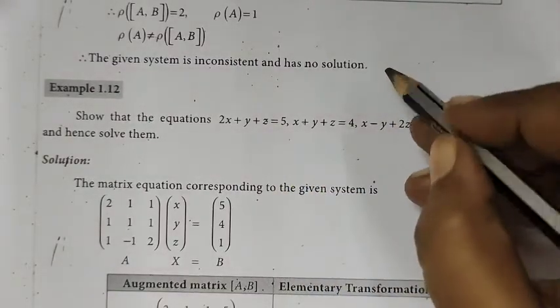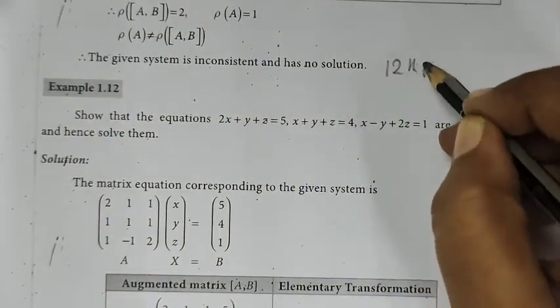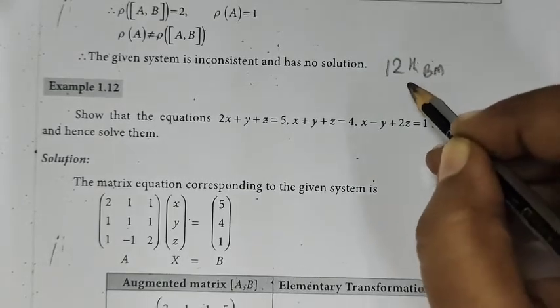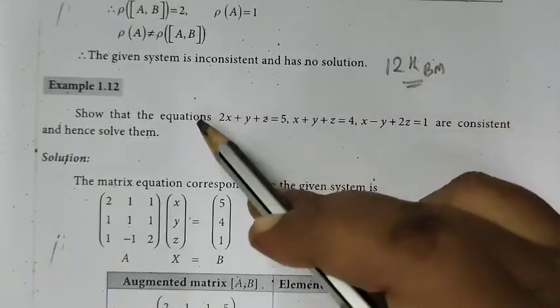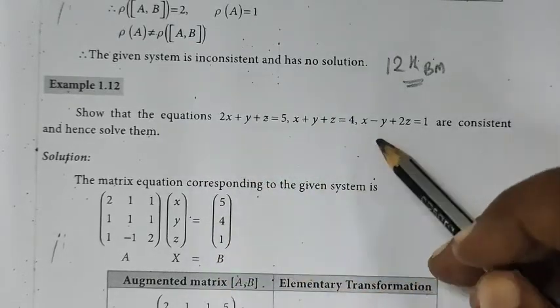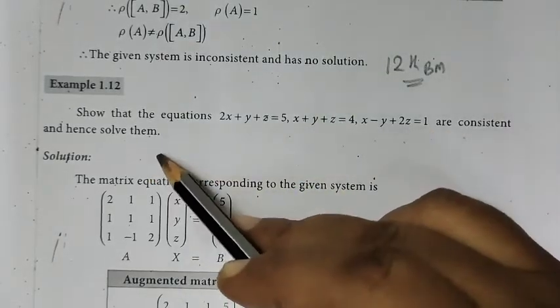So this is 12th business maths. We are seeing question number example 1.12, Chapter 1. Show that the equations 2x+y+z=5, x+y+z=4, x-y+2z=1 are consistent and hence solve them.